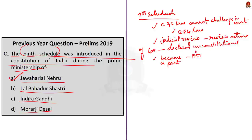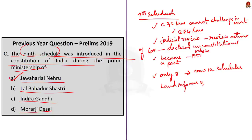If you are wondering why this schedule was added, schedule 9 consists of acts and regulations of state legislatures dealing with land reforms and abolition of the Zamindari system, and of parliament dealing with other matters. The inclusion of this schedule did not happen just like that. In the aftermath of the Kameshwar Singh versus State of Bihar judgment, the government got apprehensive that the whole agrarian reform program would be endangered. So to ensure agrarian reform legislation did not run into heavy weather, the legislature amended the constitution in 1951 under the prime ministership of Jawaharlal Nehru, which inserted the ninth schedule.